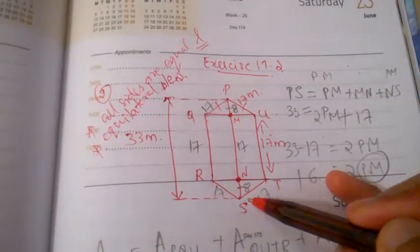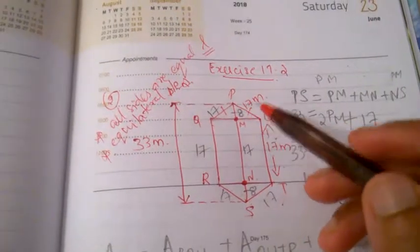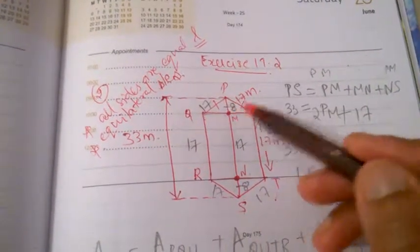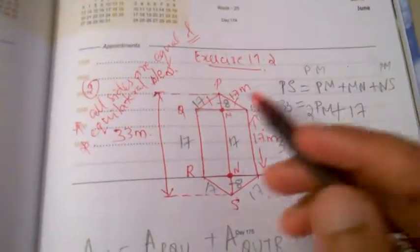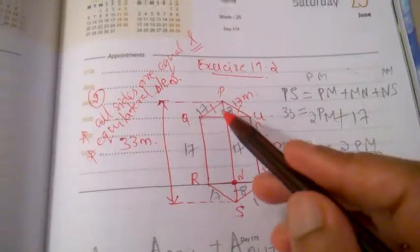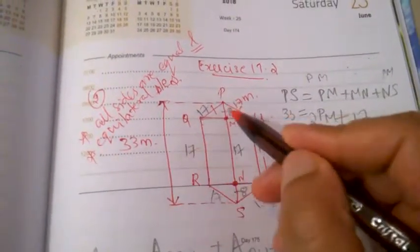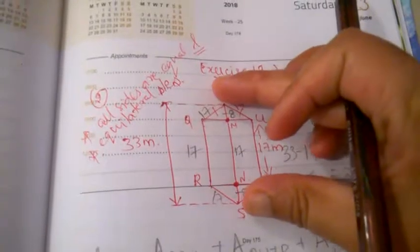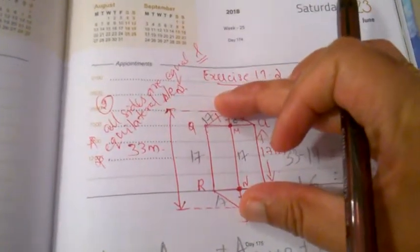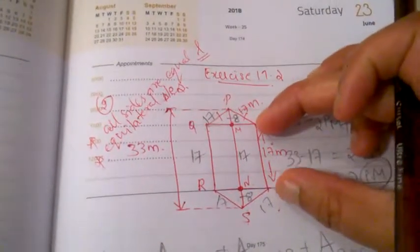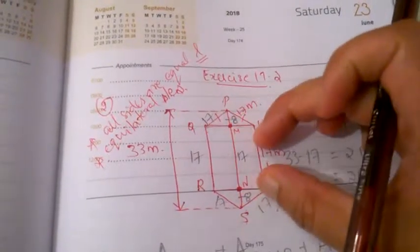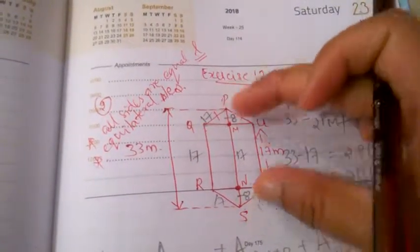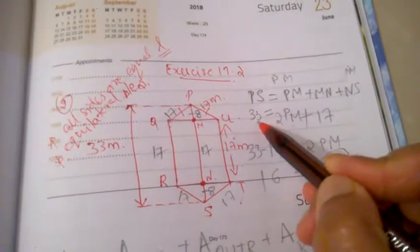Now we have to find out the height of the triangle if we need the area of the triangle. How do we find the height? We have this whole thing PS as 33 meters given in the question and this much is given as 17 meters also in the question. So now the whole thing PS is equal to PM plus MN plus NS, right?